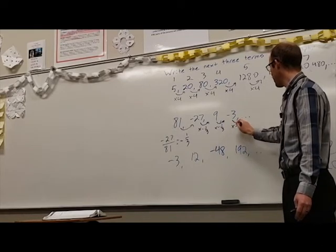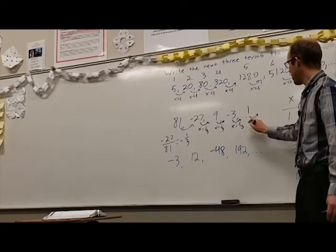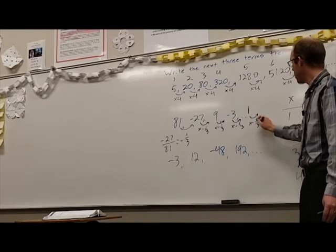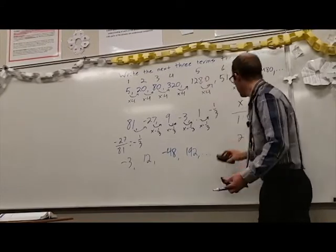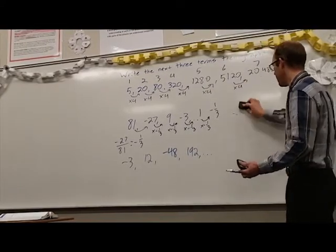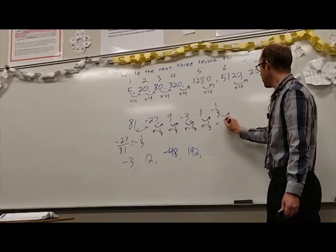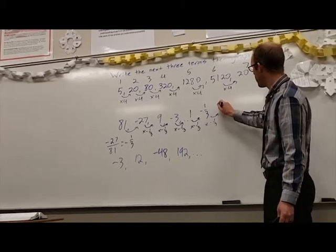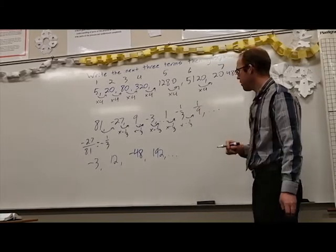So negative 3 times negative one-third will end up being positive 1. Multiply that by negative one-third and we get negative one-third. Multiply that by negative one-third and we get positive one-ninth and we could continue that if we wish.